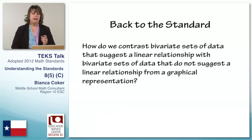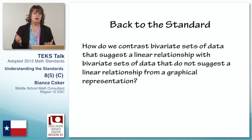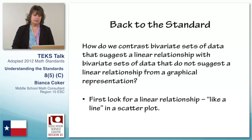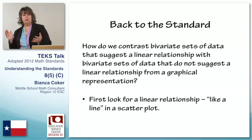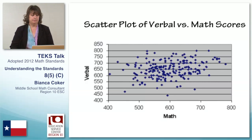So, back to the standard. How do we contrast bivariate sets of data that suggest a linear relationship with bivariate sets of data that do not suggest a linear relationship from a graphical representation? First, we're going to look for a linear relationship like a line in a scatter plot.